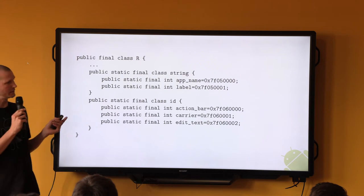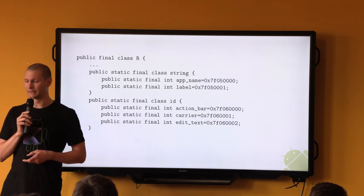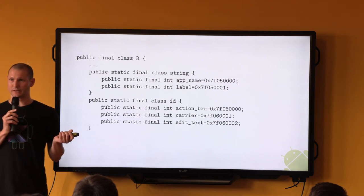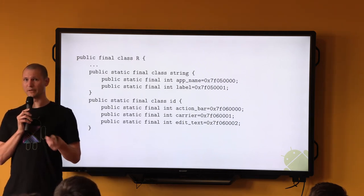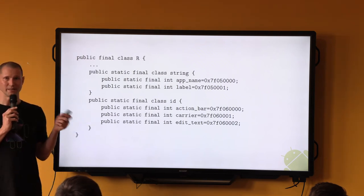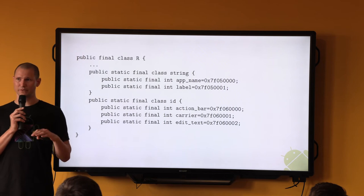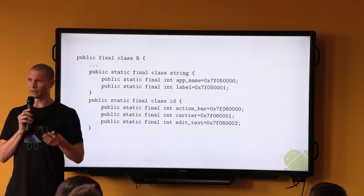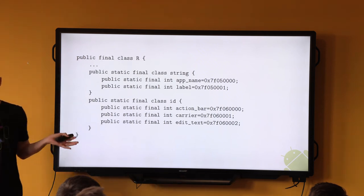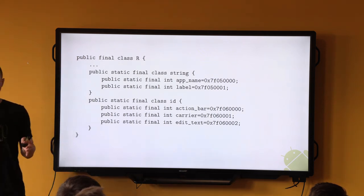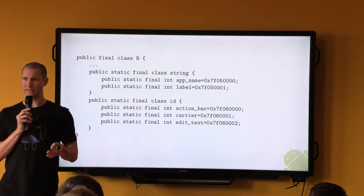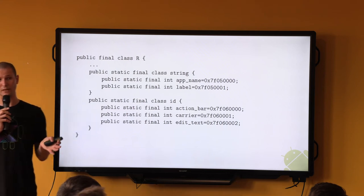This is the R class with those weird hex numbers. For every resource type in your application there is a corresponding inner class, and within each class every resource of the given type is enumerated with a unique numerical qualifier. When you're coding, you should think of them as completely random numbers — any time you recompile your application, these numbers can and will change.